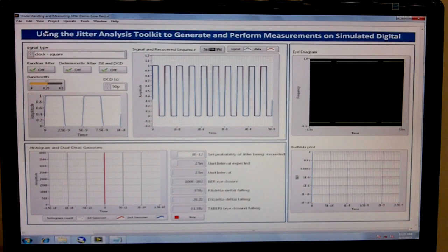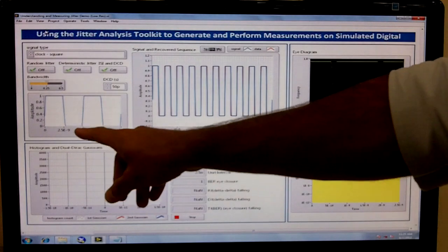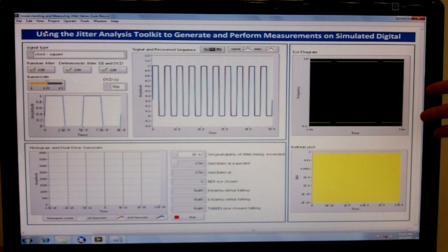So what we're doing here is actually generating a simulated digital signal using the Jitter Analysis Toolkit, and then using more of the VIs in the toolkit in order to analyze the signal. You can see here a nice perfect square wave and then an eye diagram with absolutely no jitter, just perfect edges.